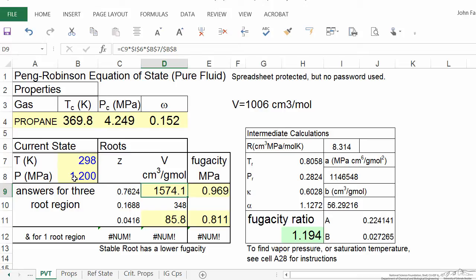We need to determine the saturation pressure, and then we can see if that's the condition where we have equilibrium for the system at 298 K. Here's the fugacity ratio—the ratio of vapor to liquid fugacity. At saturation, this number is 1.